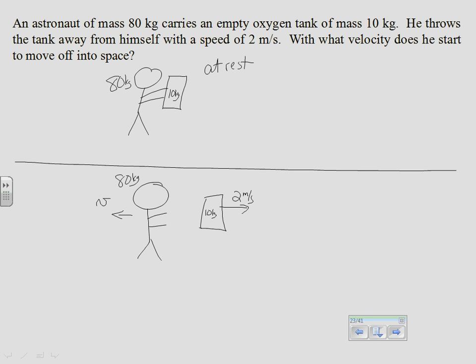In this example problem, there's an astronaut sitting at rest holding an oxygen tank, which is also at rest. He's outside the space station and the cord to pull himself back broke, so he's stuck. He takes off his oxygen tank. Initially, both the astronaut and the oxygen tank are at rest, so the initial momentum of the system — the momentum of the man plus the momentum of the tank — is zero. He throws the tank away from him, which causes him to move in the opposite direction. From Newton's third law, if he pushes the oxygen tank to the right, the tank pushes back on him to the left.